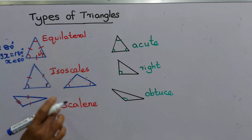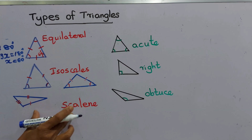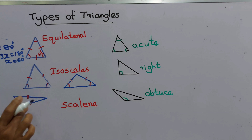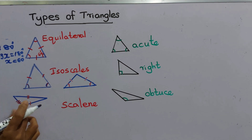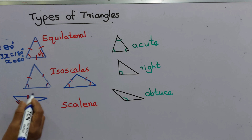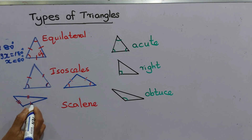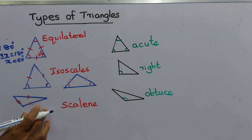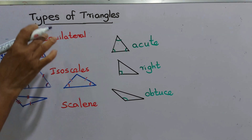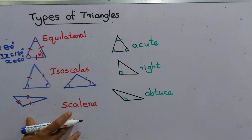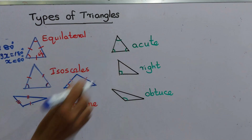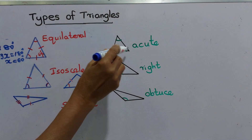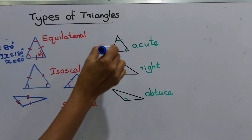Now we come to another type of triangle — the scalene triangle. In a scalene triangle, all three sides are unequal; each side has a different length. We name this type as a scalene triangle. This completes the classification of triangles by their sides. Now we will look at triangles separated according to their angles.